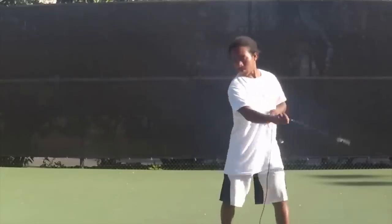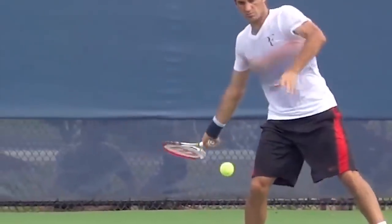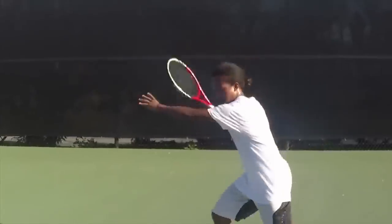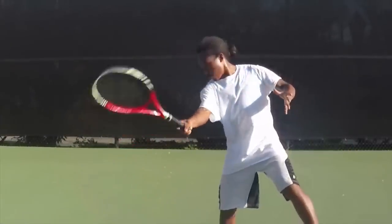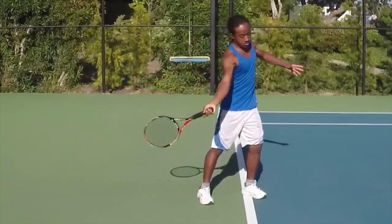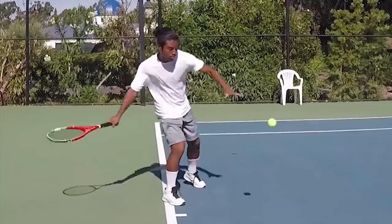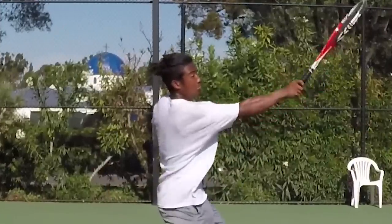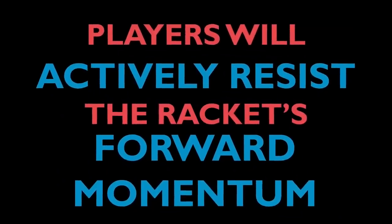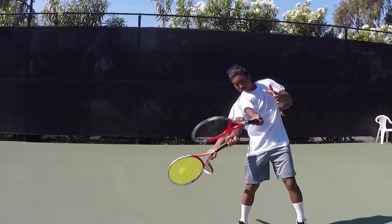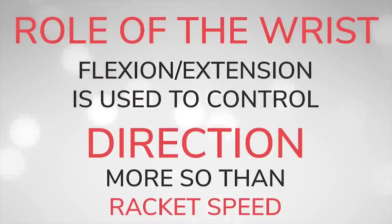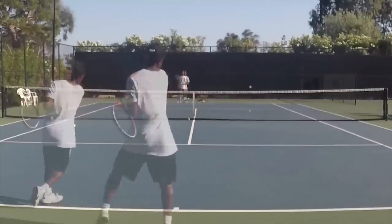Instead of actively snapping, the wrist should be relaxed and released by the force of the racket head. The racket is turned over by centrifugal force. Right before contact, the hand reaches its furthest point away from the body and begins to come back in — this causes the racket's momentum to pronate the forearm, which is a major source of racket head speed and topspin. According to Brian Gordon's research, the role of wrist flexion and extension is not essential in building racket head speed but is used to control the direction of the ball — elite players will actively resist forward wrist flexion when hitting down the line or inside out.